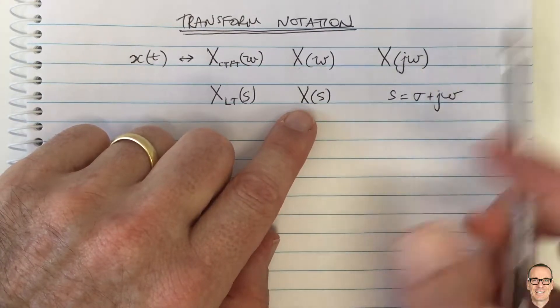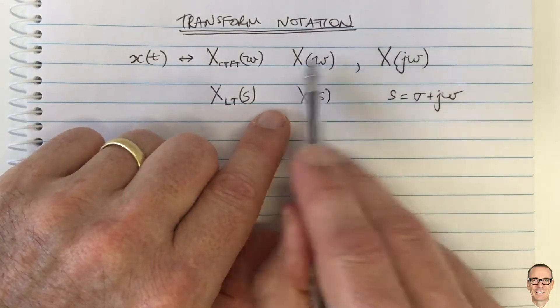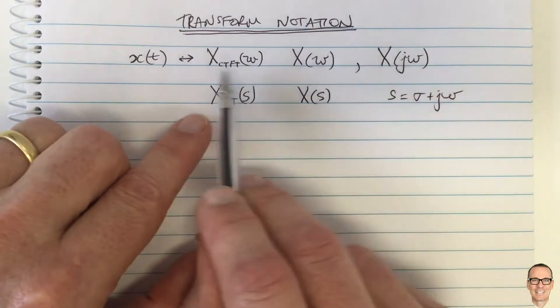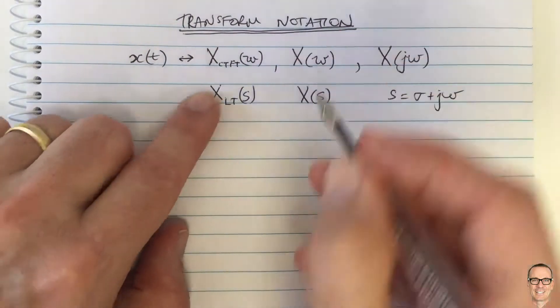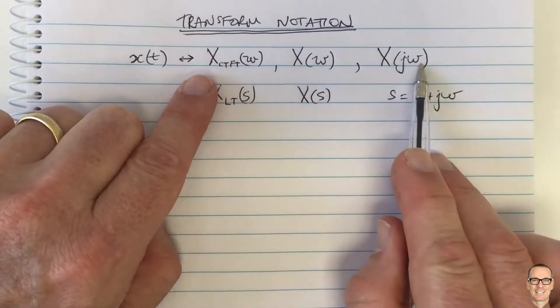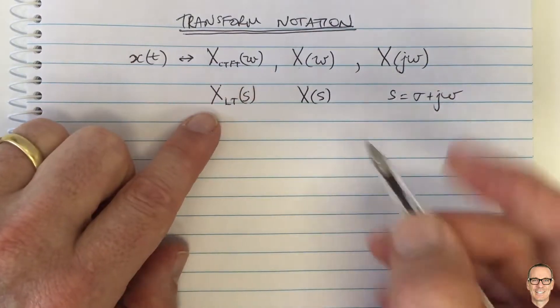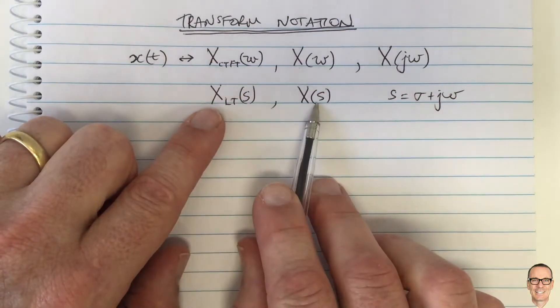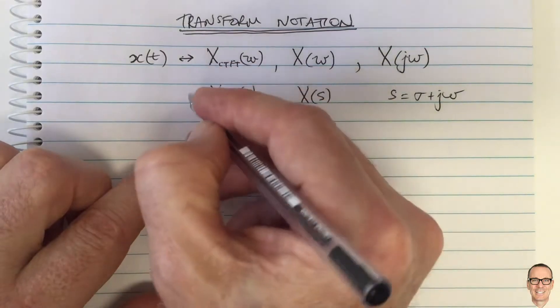So these things, these two are used interchangeably. This is probably what it should be used. But all of these are the continuous time Fourier transform. And both of these are the Laplace transform.